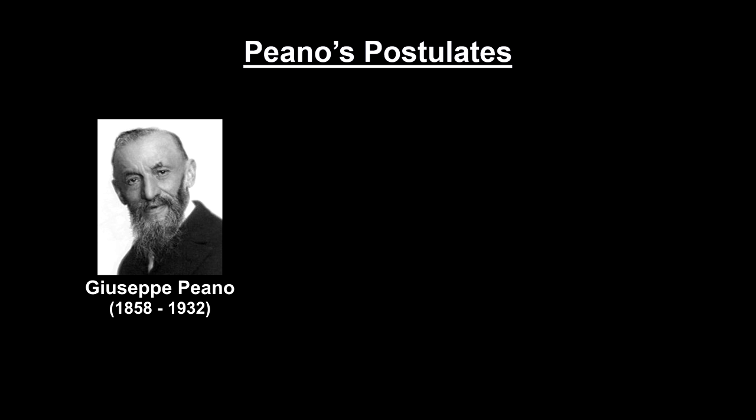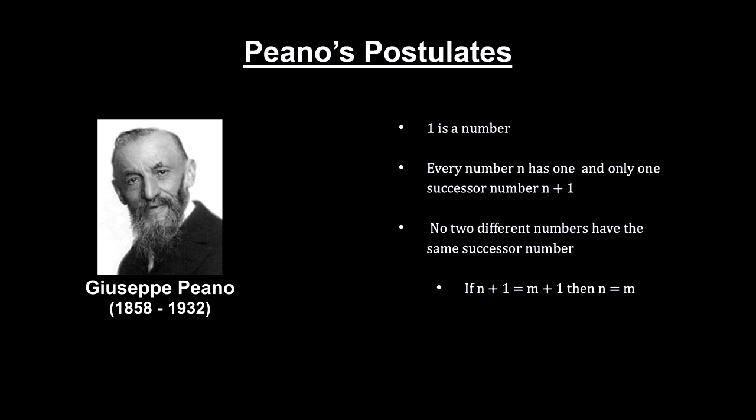In simple terms, starting with the counting numbers, they are as follows. One is a number. Every number n has one and only one successor number, n plus one. And no two different numbers have the same successor number.